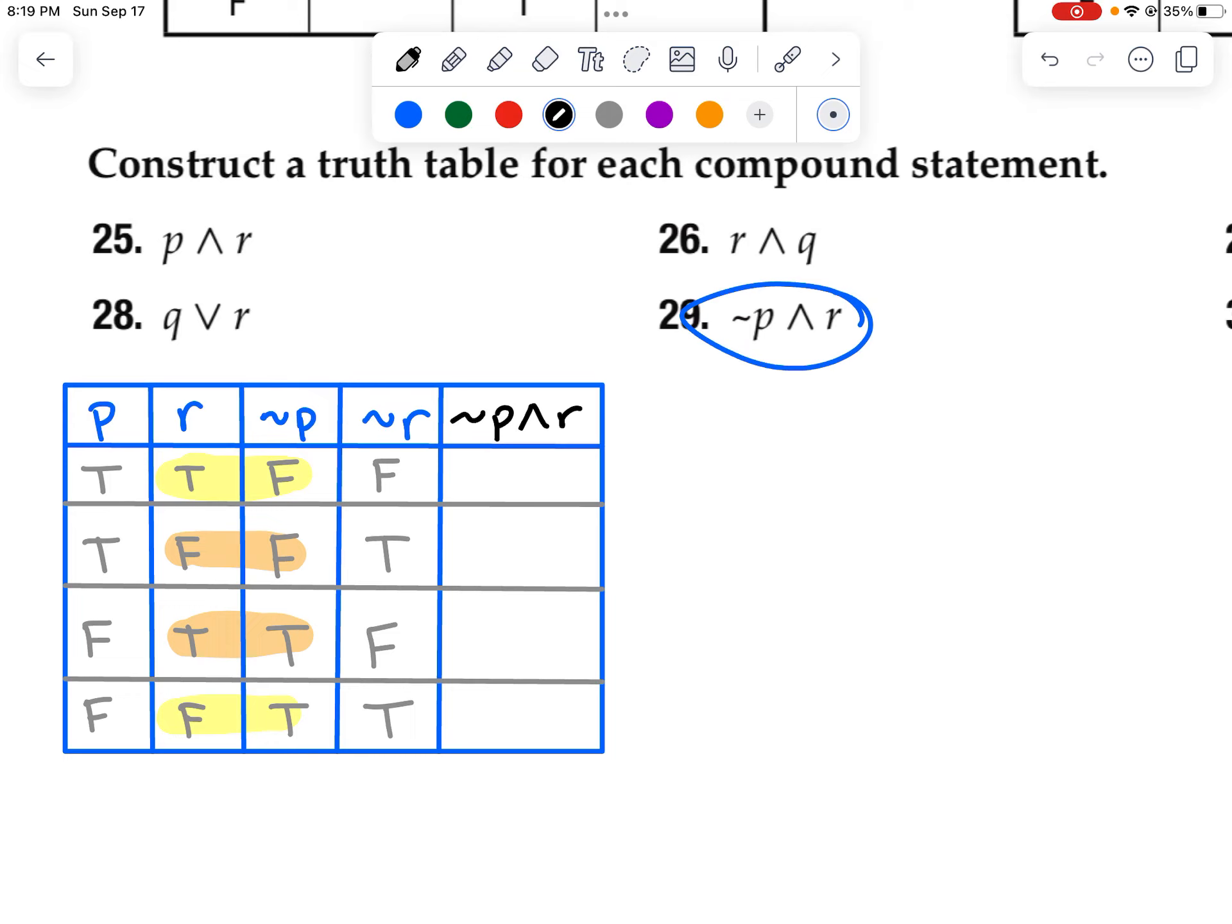So in that first box, that first row, I've got true and false. Well, I need both of these to be true for a conjunction to be true. So that's false. That doesn't work. False, false also doesn't work. But true, true here, not P and R. This one would work, and the last one would not work.